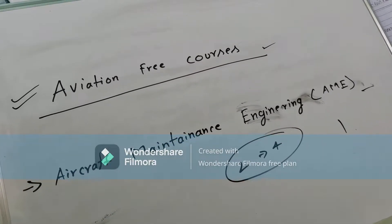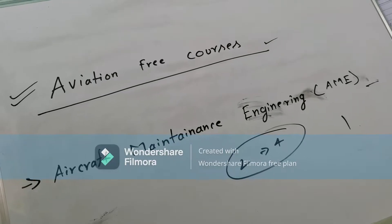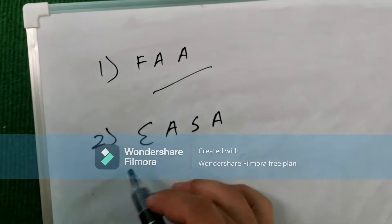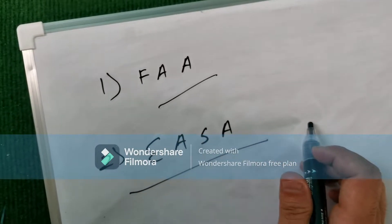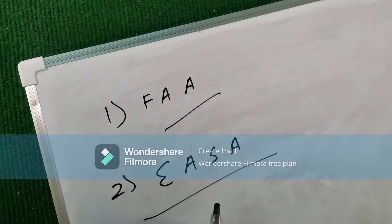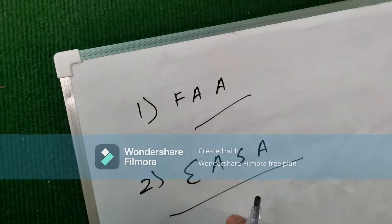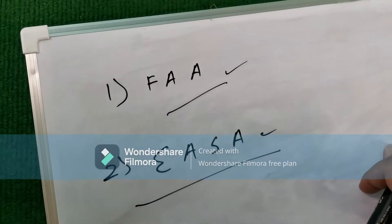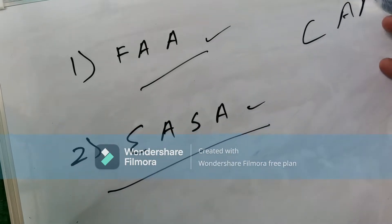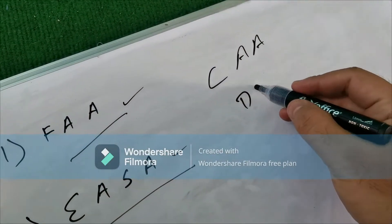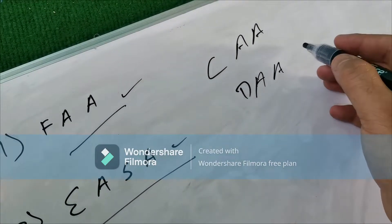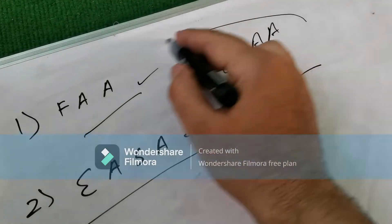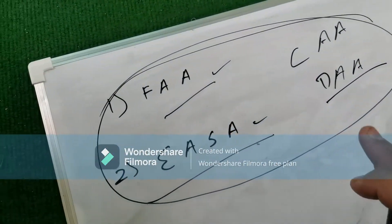Let's talk about the organizations. There are two main companies: FAA, which is the Federal Aviation Administration, and EASA, which is the European Union Aviation Safety Agency. You also have one organization in your own country — for example, Australia has CASA, and India has DGCA or something similar. These organizations give the certification, but the syllabus is the same.